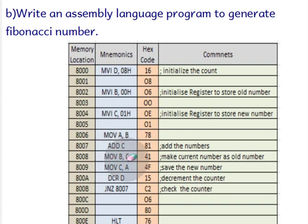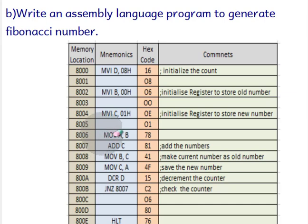The number that was in C (01) now becomes the old number because we have already generated the next number in A. So we transfer C to register B (old number), and the new number in A gets transferred to C. Then we decrement D (the count) — it goes from 8 to 7. If it is not zero, it jumps back to 8006 to continue the loop.